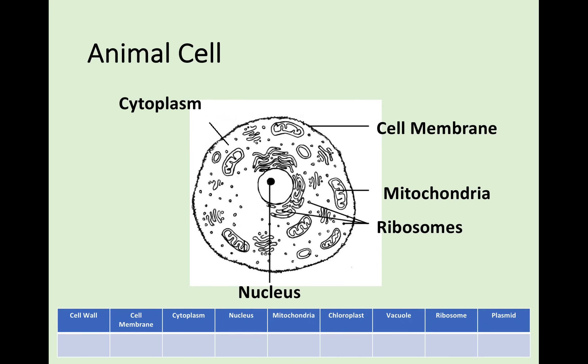I don't want you to worry too much about what these different structures do. I just want you to concentrate on where you find them in the cell and what they look like. We will discuss what they do later on in this lesson. These are all the structures that are present in an animal cell.